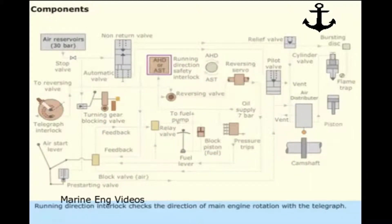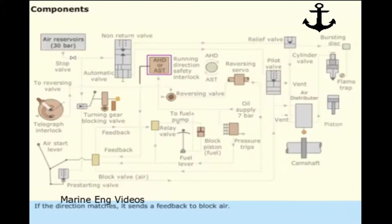Running direction lock checks the direction of main engine rotation with the telegraph. If the direction matches, it sends a feedback to block air.